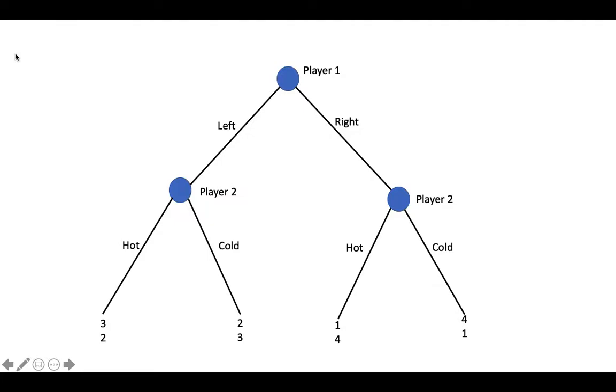As an example, consider this simple game. Player 1 moves first and can choose either left or right. Player 2 moves second and can choose either hot or cold. When Player 2 chooses, they know whether Player 1 has chosen left or right.